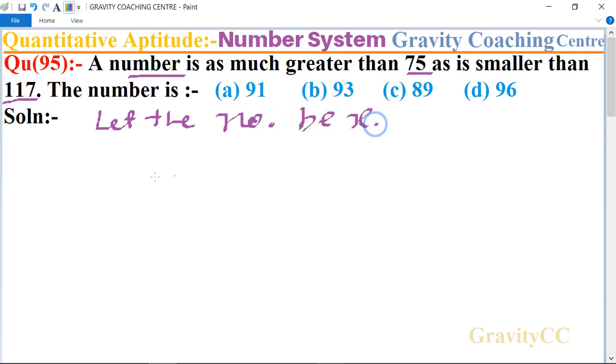And according to the question, 75 and the other one is 117. And so the number is much greater than 75 and much smaller than 117, so it is in the midpoint. Mid value x, and suppose according to the question x is...